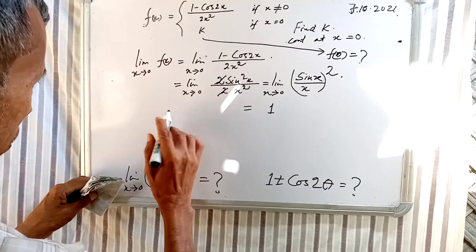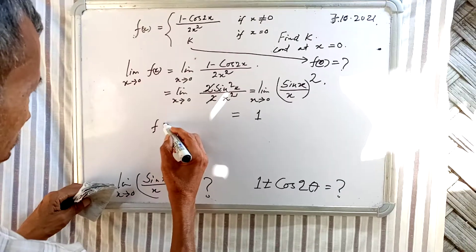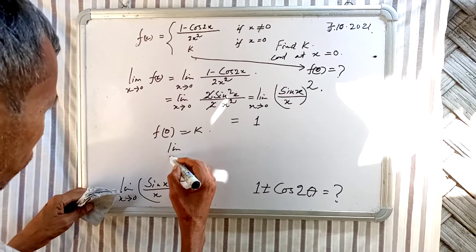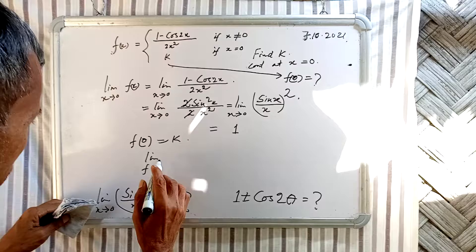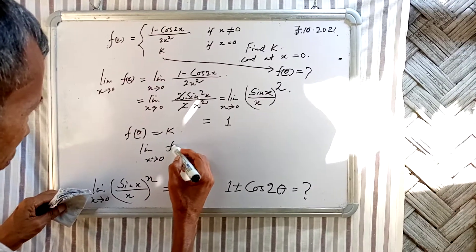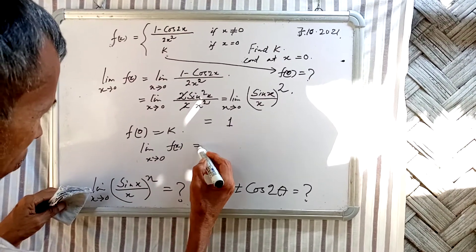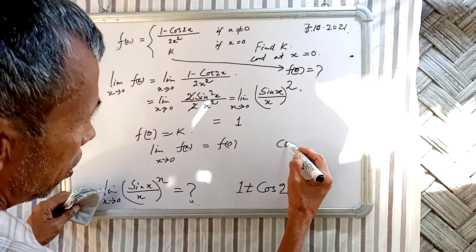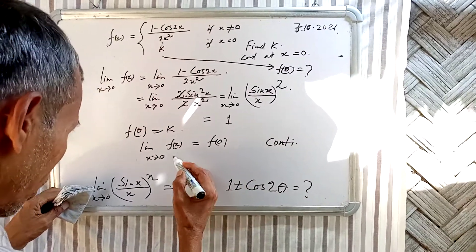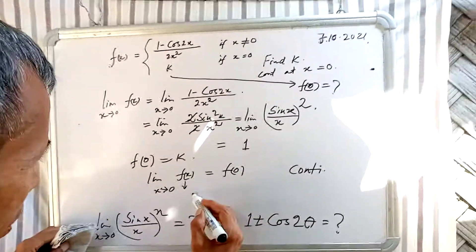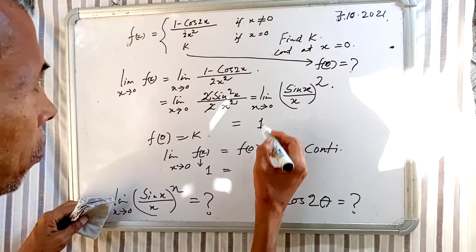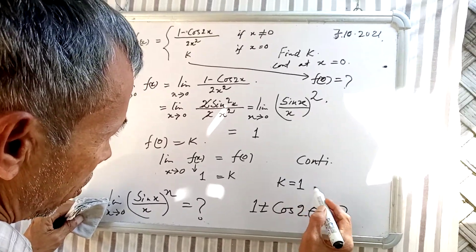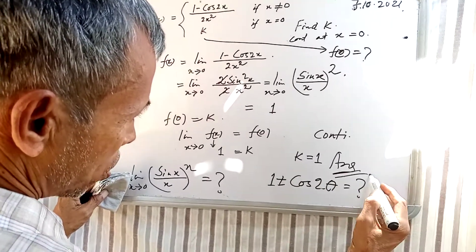Since f(0) = k is given, and for the function to be continuous at x = 0, the limit of f(x) as x tends to 0 must equal f(0). Therefore k = 1. This is the answer. Namaskar.